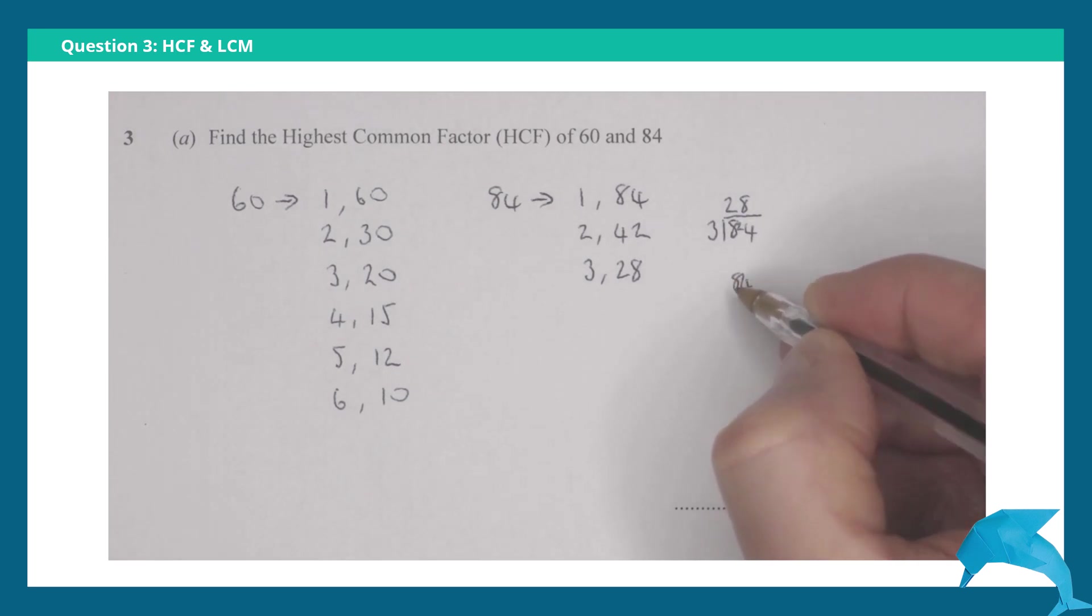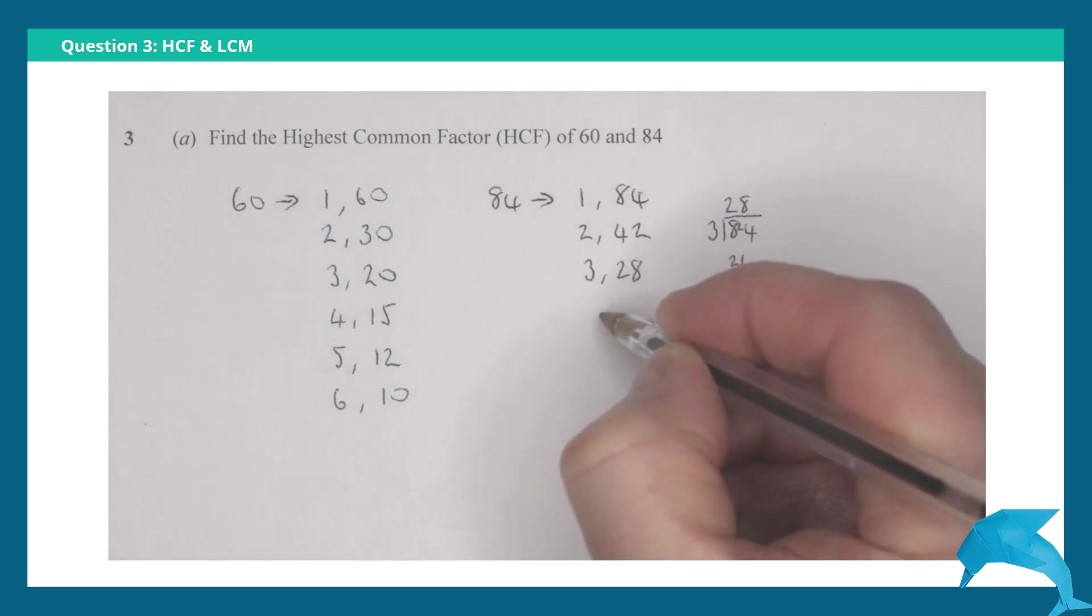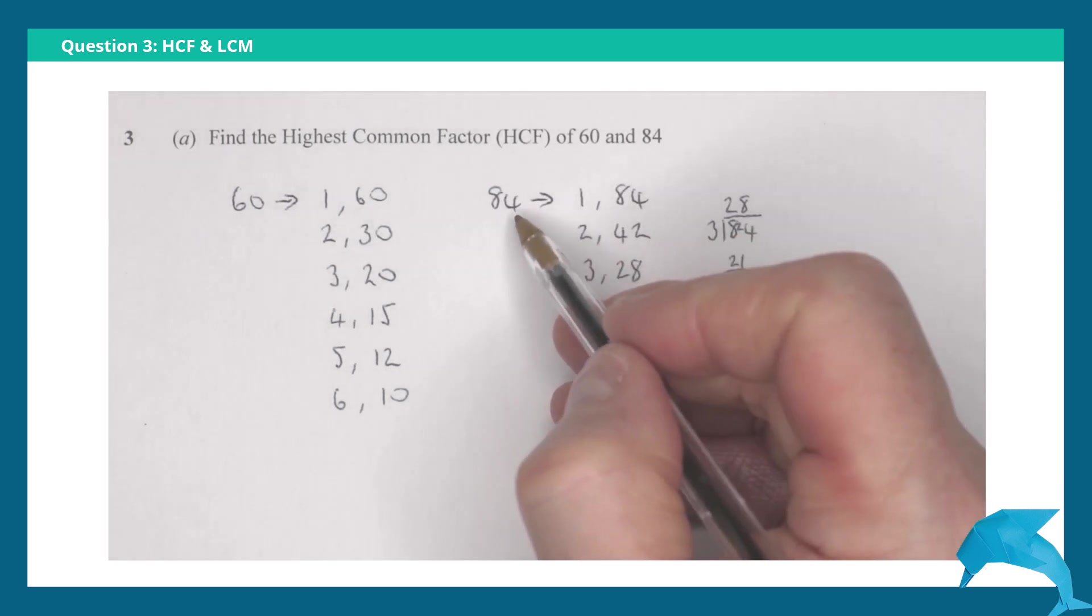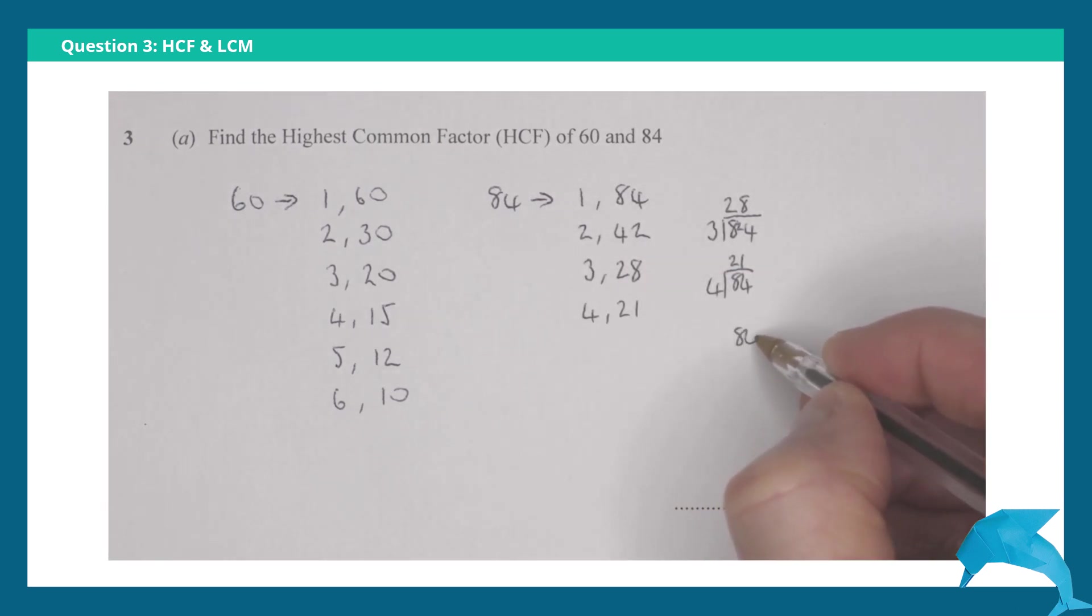84 divided by 4, so that's 4 and 21. We cannot get to 84 in the 5 times table. 84 divided by 6...